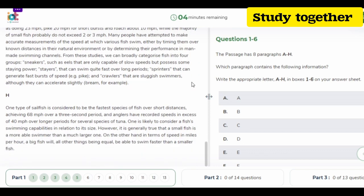Now we will see the last paragraph. One type of sailfish is considered to be the fastest species of fish over short distances, achieving 68 mph over a three second period. And answers have recorded speed in excess of 40 mph over longer periods for several species of tuna.